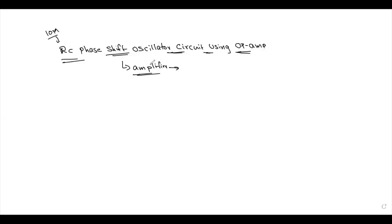The first element we consider is the operational amplifier in an inverting configuration. The op-amp is used in inverting configuration in the RC phase shift oscillator.